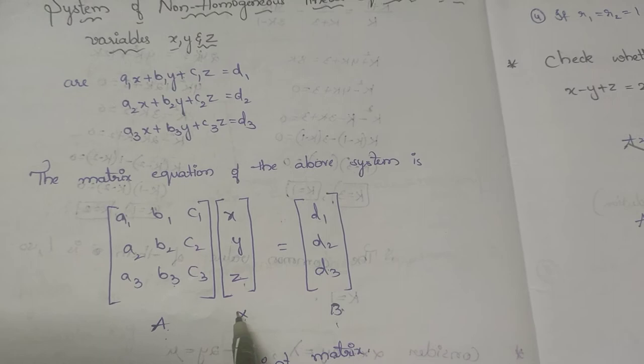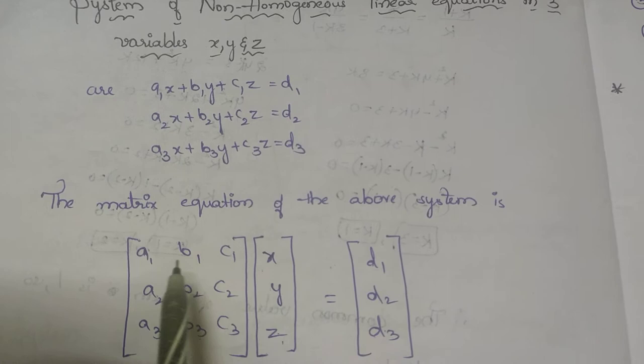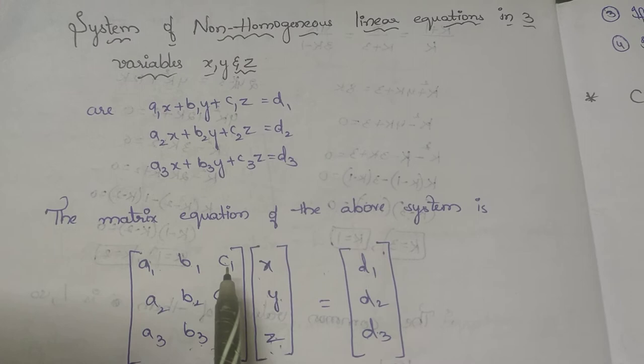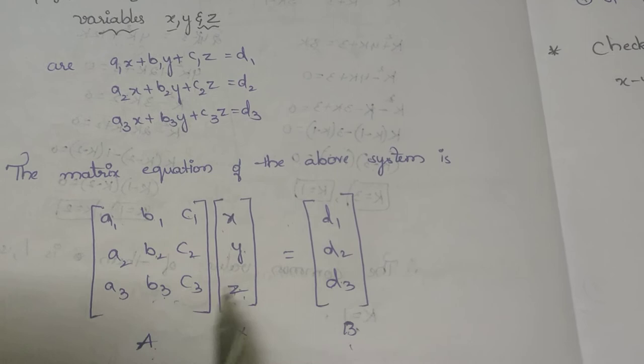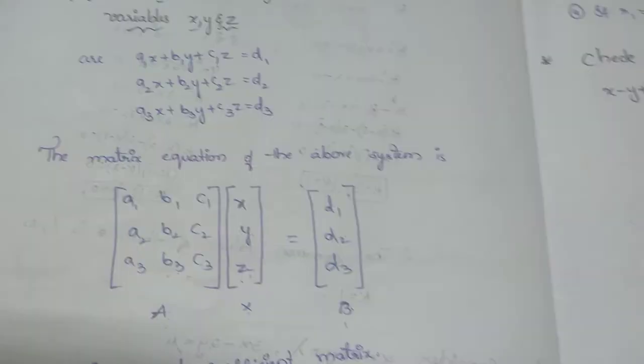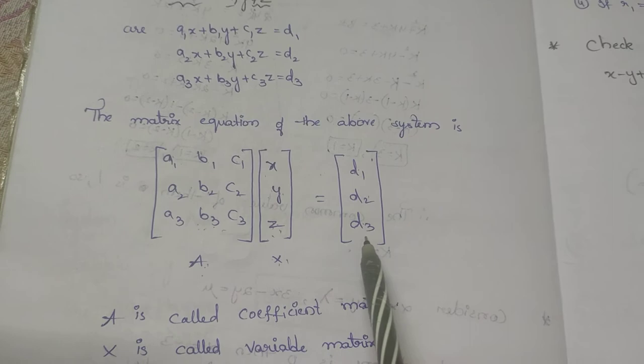Observe the matrix multiplication: A times X gives a1x + b1y + c1z, a2x + b2y + c2z, a3x + b3y + c3z. Equating corresponding elements gives back the original equations. So AX = B is the matrix equation of the given system, where A is the coefficient matrix, X is the variable matrix, and B is the constant matrix.